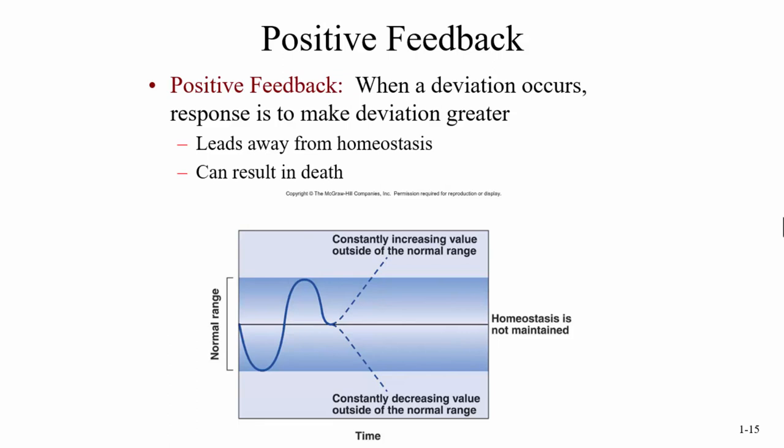Positive feedback is different. When a deviation occurs, the response is to make the deviation greater — it leads away from homeostasis and can even result in death. One example is blood clotting. With blood clotting, when you have a cut, platelets stick to it to block it off. They release chemicals like thromboxane that make other platelets sticky. Now those platelets release more of that chemical to make even more platelets sticky, and so on — that's positive feedback.